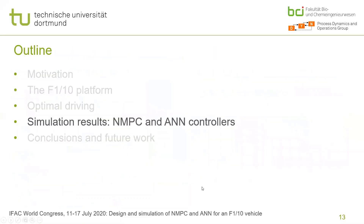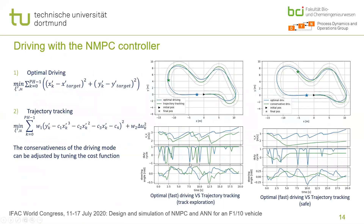Let's have a look at some results. First, let's look at driving with the NMPC controller — specifically, optimal driving, fast driving if you will, versus trajectory tracking. You can see the cost functions implemented for the two cases on the left.